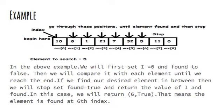Next element at the index 1 is 8 and compare it with the 5. This goes on till last element. If we find our desired element in between then we will stop and set the found equal to true and return the value of i and found. In this case we will return 6 and true. That means the element is found and it is at 6 index.